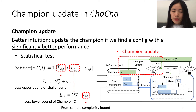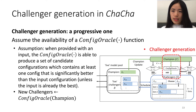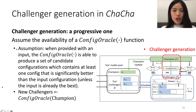Now that we have set up a way to promote the Champion, let's see how we gather the Challengers — the configurations under consideration. At first glance, you may feel this question is trivial. For example, why can't we just define a search space and treat all the configurations as the Challengers?